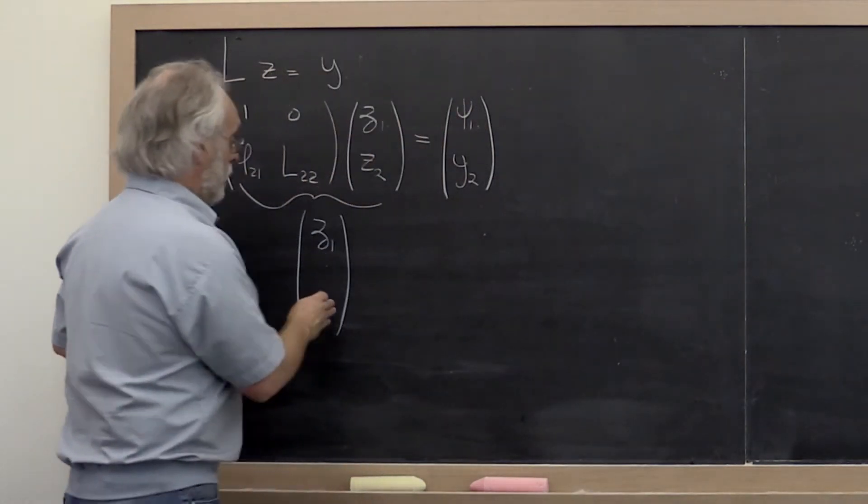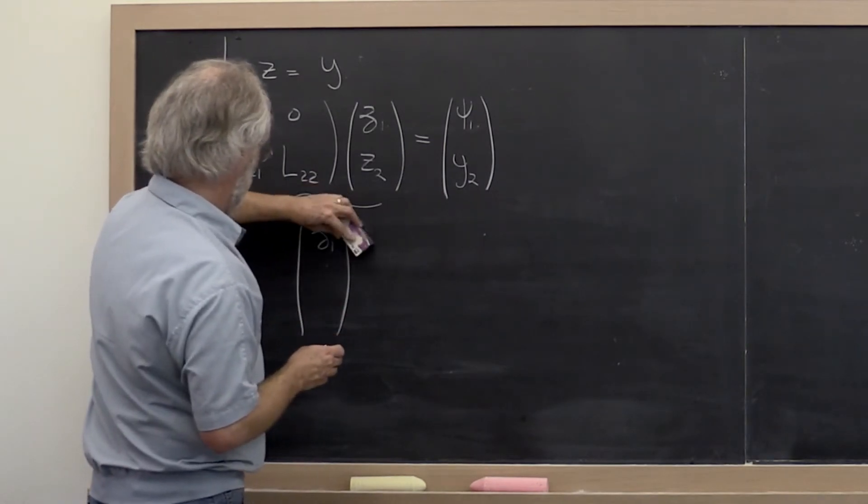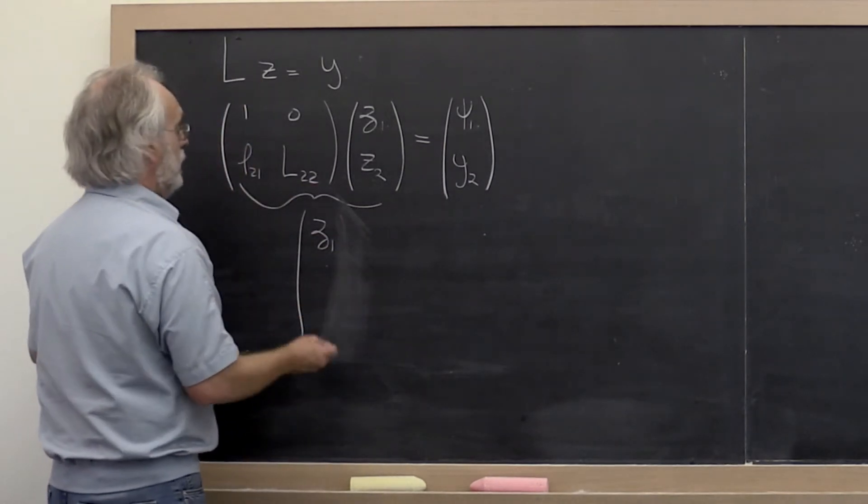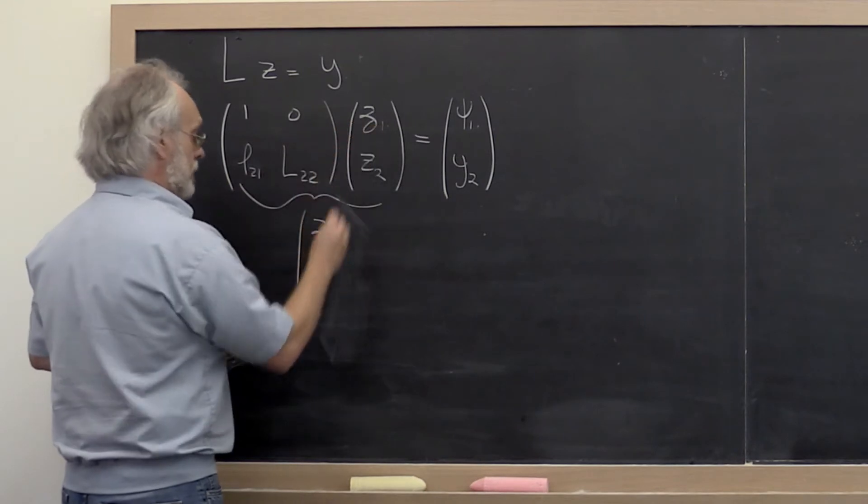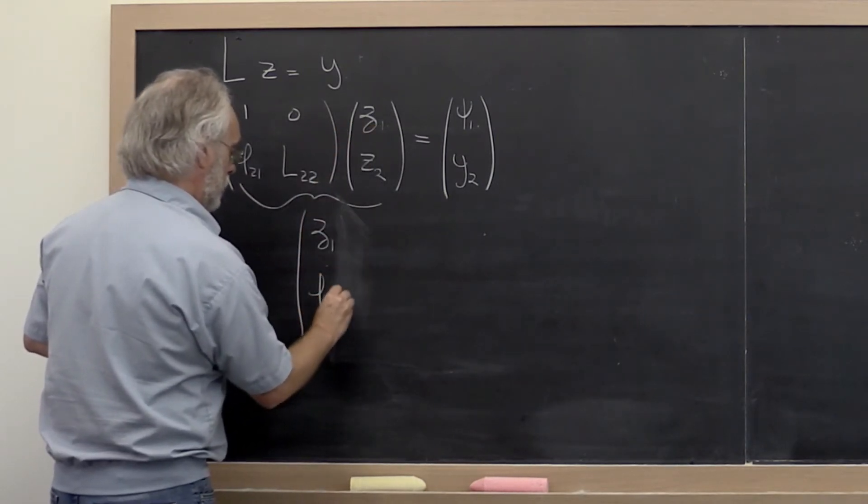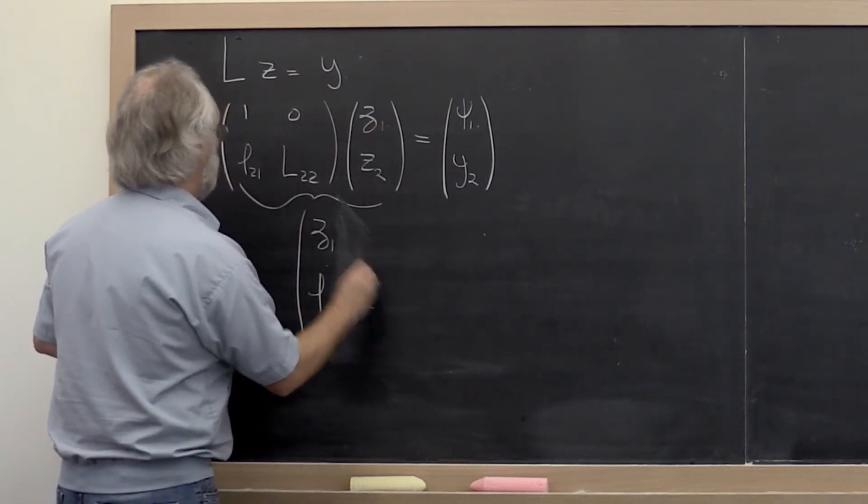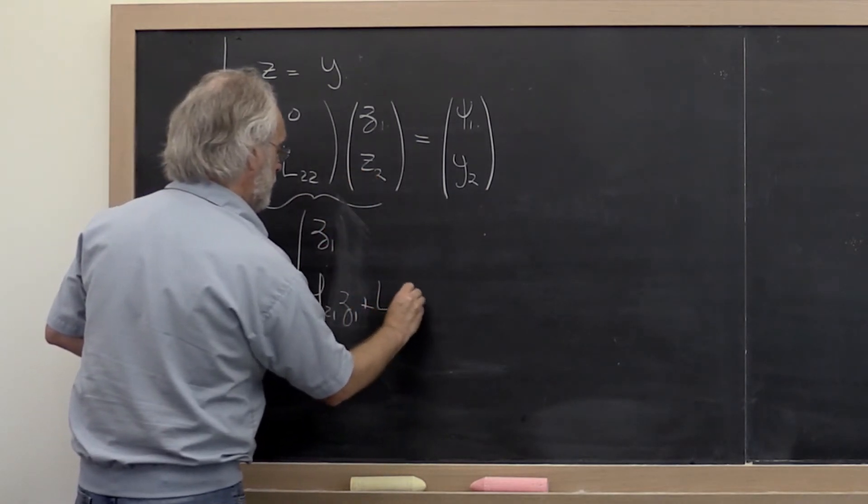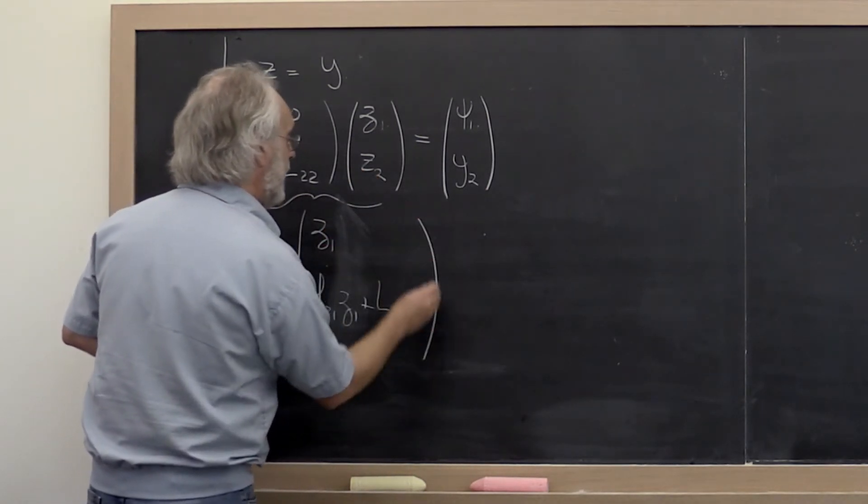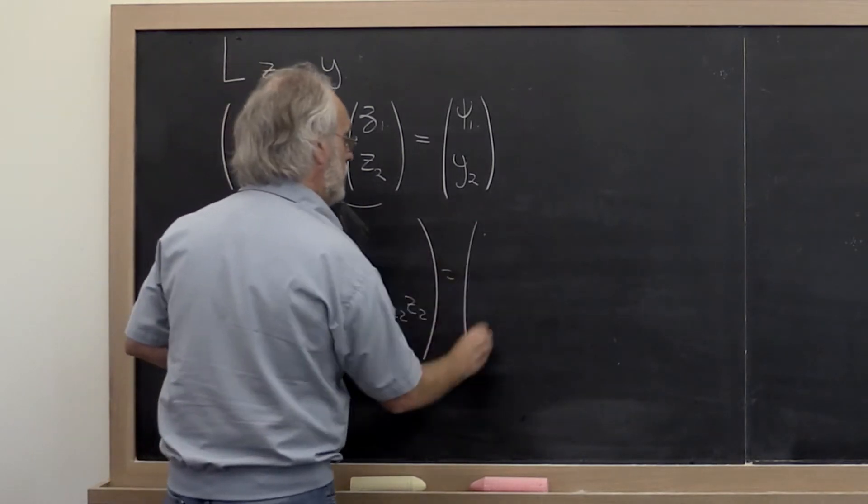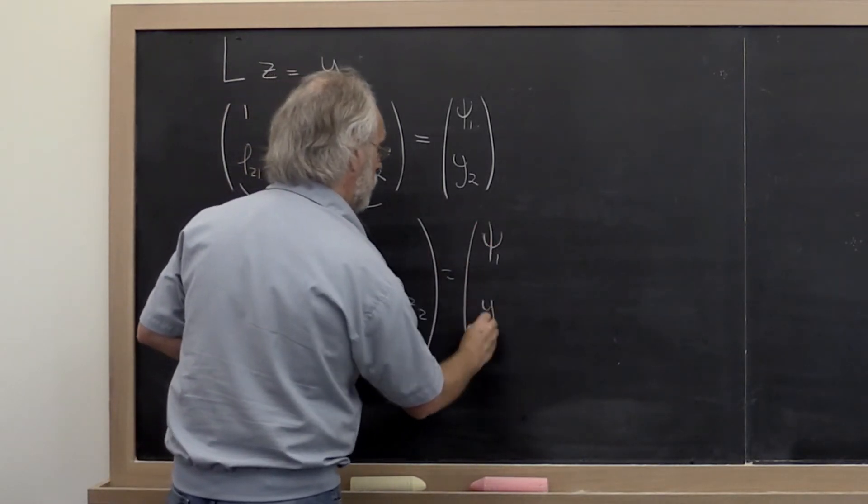And down here, I should have given myself a little bit more room. Down here we get L21 times zeta_1 plus L22 times z_2. And that, notice, is equal to psi_1, y_2.